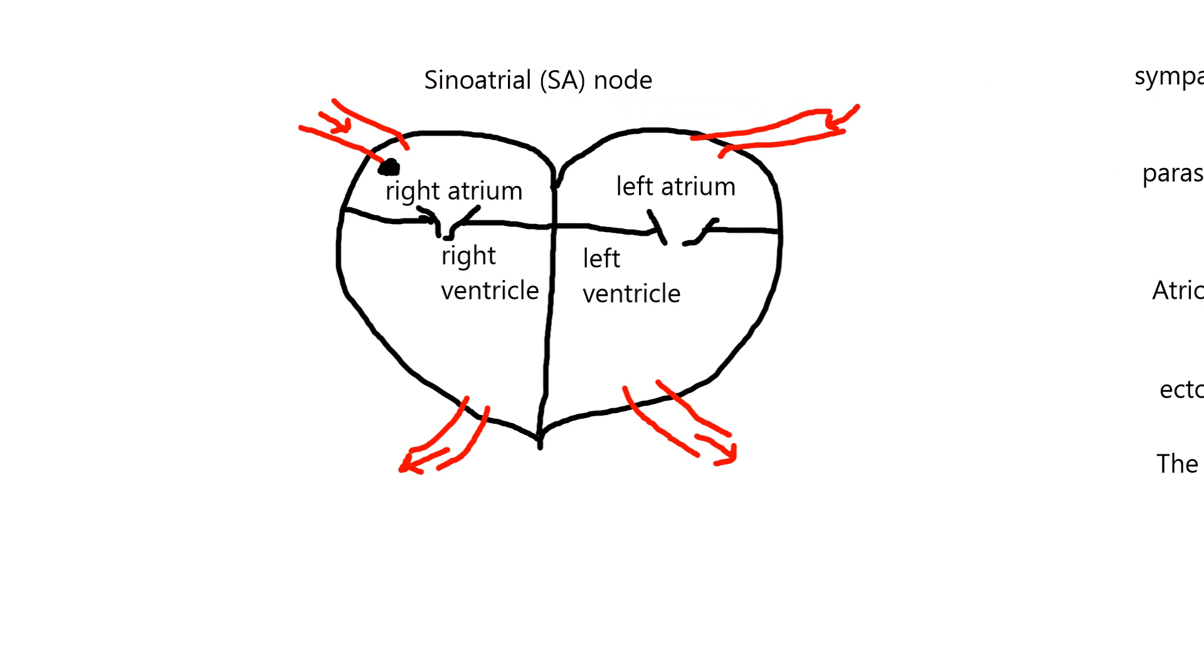It's called the sinoatrial node. I could put it there, but just for cleanness, I'm going to put it up here. The SA node. The SA node is right here, kind of like right in the atrium where the vena cava joins it.